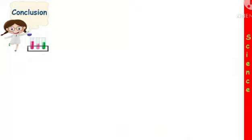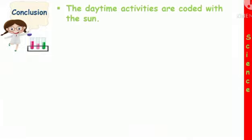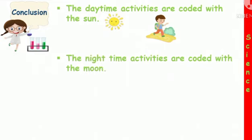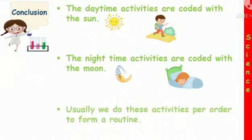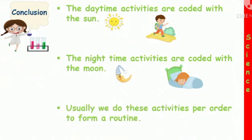What can we conclude? We can conclude that the daytime activities are coded with the sun, like going to school. The nighttime activities are coded with the moon, like sleep, and usually we do these activities in order to form a routine.